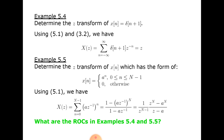Determine the Z-transform of x(n) where x(n) equals a^n for n between 0 and N-1, and zero otherwise. We have X(z) equal to the summation of (a·z^(-1))^n, which equals z divided by (z minus a), or equivalently (1 minus (a·z^(-1))^N) divided by (1 minus a·z^(-1)), which equals (z^N minus a^N) divided by (z^(N-1)·(z minus a)).